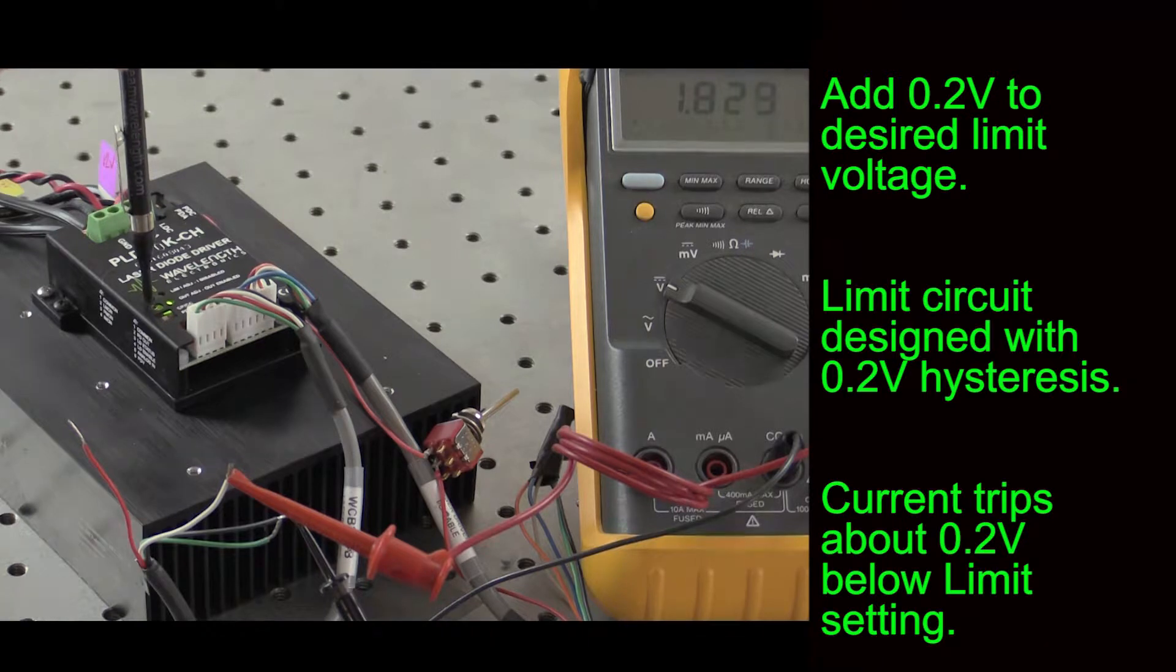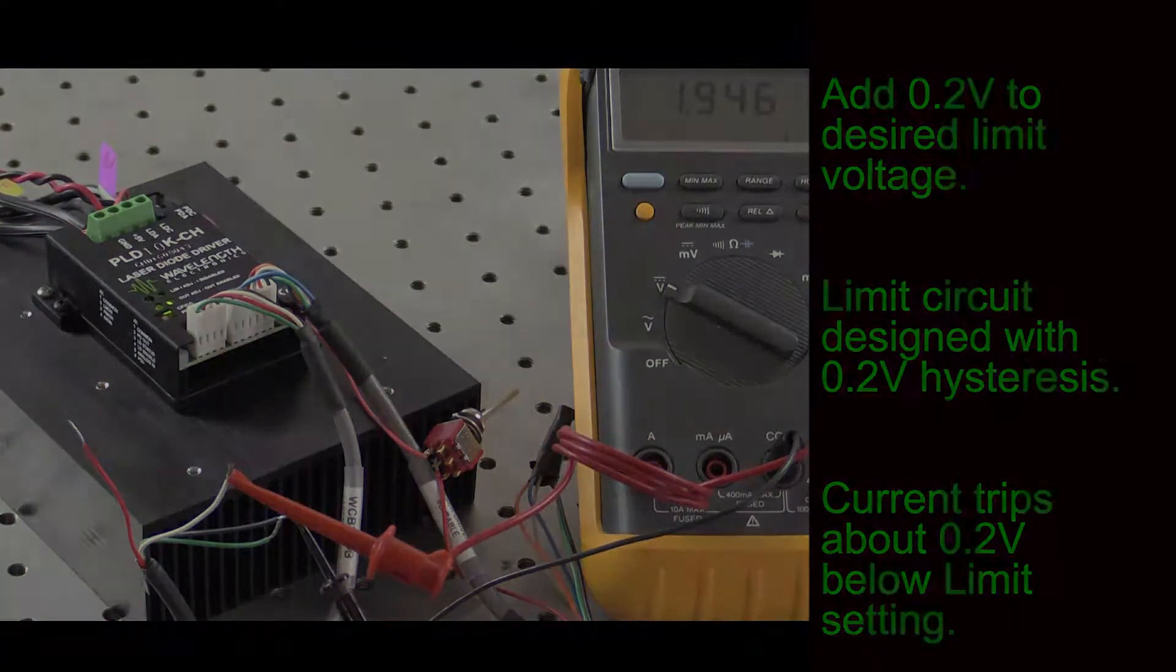Note that the limit circuit is designed with a small hysteresis. The current trips about 0.2 volts below the setting, so add 0.2 volts to the desired limit voltage.